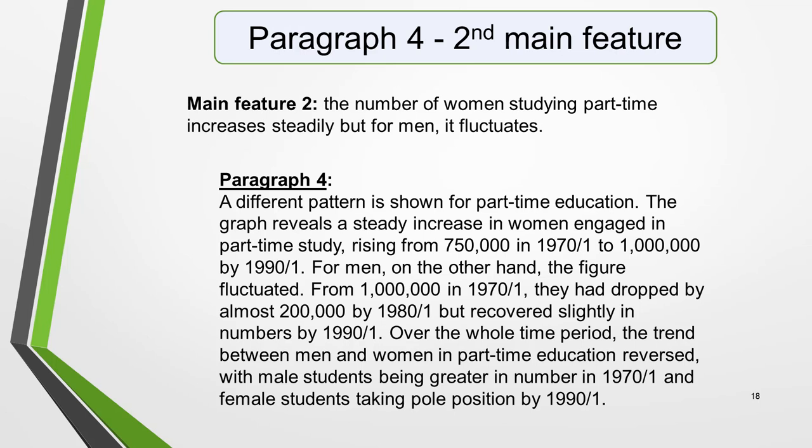For the fourth and final paragraph, you do the same thing for the second main feature. Our main feature 2 is: the number of women studying part-time increases steadily, but for men it fluctuates. And this is how you could write the paragraph: a different pattern is shown for part-time education. The graph reveals a steady increase in women engaged in part-time study, rising from 750,000 in 1970–71 to a million by 1990–91. For men, on the other hand, the figure fluctuates — from a million in 1970–71, they had dropped by almost 200,000 by 1980–81, but recovered slightly in numbers by 1990–91.